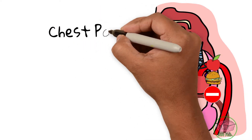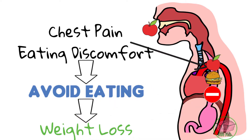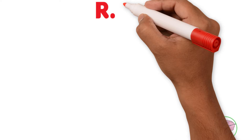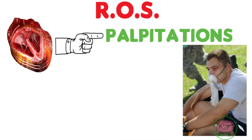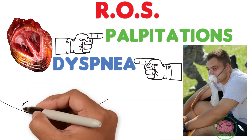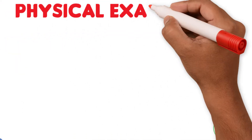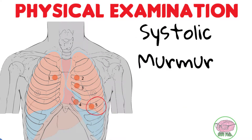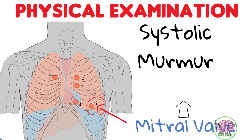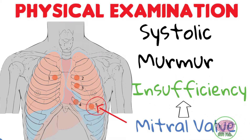In addition, the patient's chest pain and discomfort when swallowing can also be an important factor causing the patient to avoid eating food that often. In the review of systems, we also learned that Juan feels palpitations, as well as shortness of breath, known as dyspnea, and loss of consciousness, known as syncope. The only important finding on physical examination is a systolic heart murmur located in the 5th intercostal space mid-clavicular line. This thoracic region corresponds to the mitral valve, and a systolic murmur indicates mitral insufficiency, meaning that this valve is not closing properly.